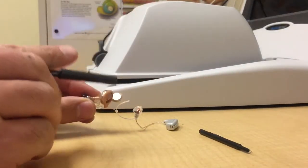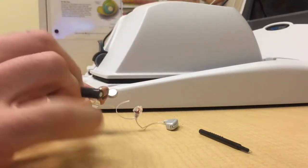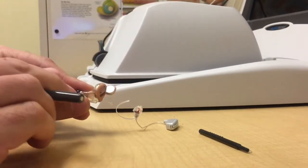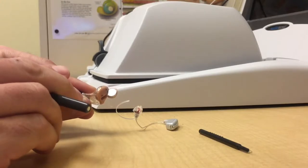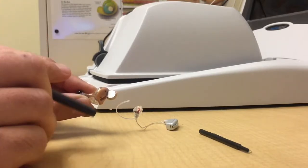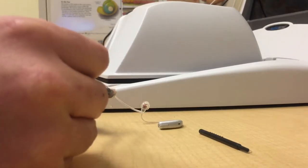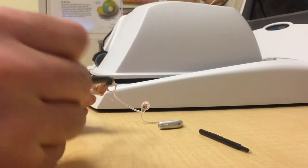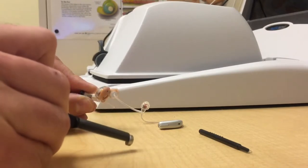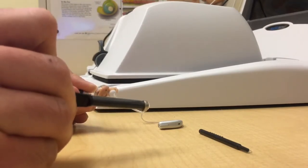This is essentially a stick that you can hold onto nice and tight, gives you good leverage. At the end of it is a strong magnet that allows you to pick up anything metallic, like a battery. So to remove this battery from this hearing aid, I can just put the magnet right on top there and then pull up, and the battery will come right out.